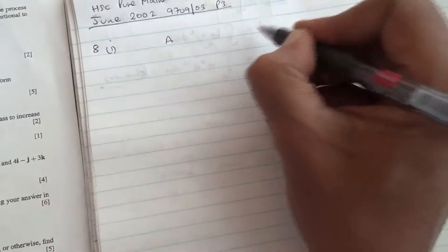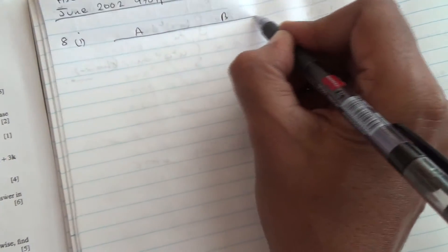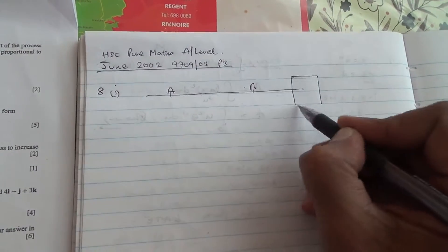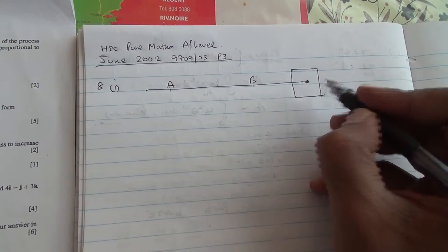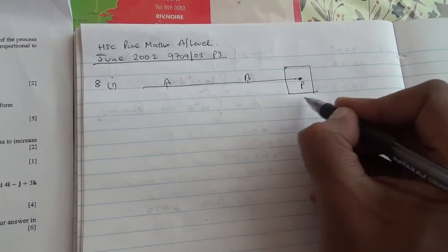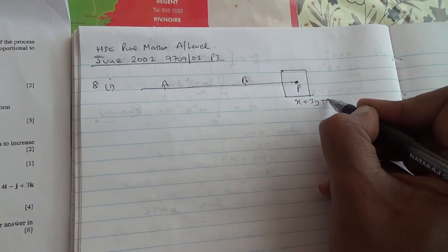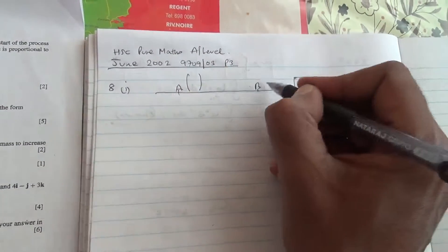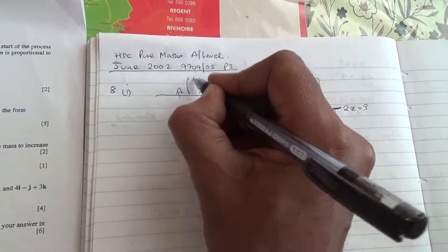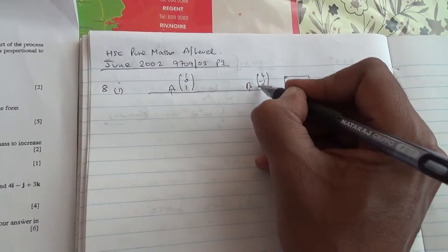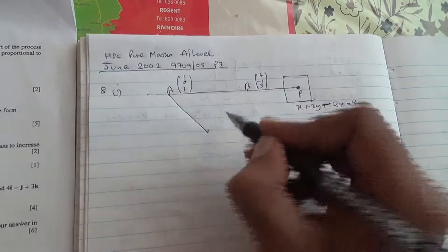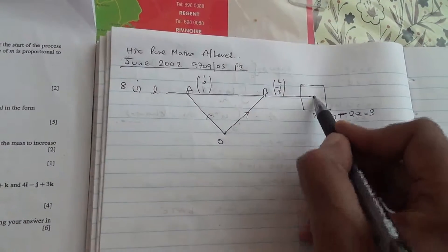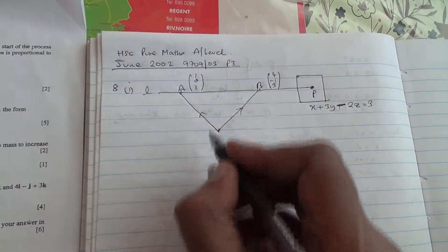For the first part, we have vector A and vector B, and this is line L. It passes through points A and B and intersects a plane. So let's suppose this is the plane and that's the point of intersection. The position vectors of A and B are (1, 0, 1) and (4, -1, 3) respectively. Now we are going to find the vector AB. Vector AB equals AO plus OB from geometry.